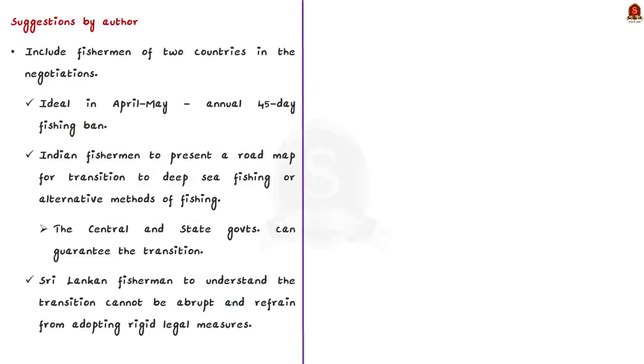What are the suggestions given by the author? The main suggestion is to include the fishermen of two countries in the negotiations. This is possible in the period of April to May, when annual 45 day fishing ban is in place to conserve marine resources and facilitate fish breeding. Indian fishermen can present a roadmap for transition to deep sea fishing or alternative methods. They can agree for a short and swift transition.